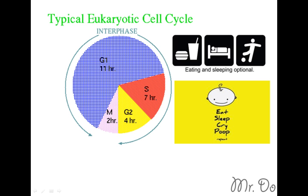Interphase occurs on average about 23 hours. So basically your cells grow and replicate during those 23 hours. And as you can guess, the mitotic phase happens for about one hour — which makes a whole cycle of a day. So technically, during the day, your cell is always continuously growing and dividing.